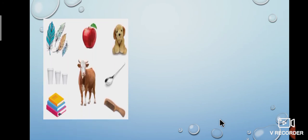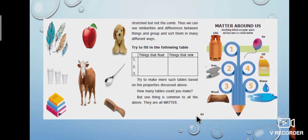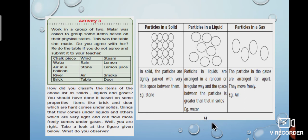Page number 43 gives the similarities and differences of matter. Finally, we conclude that matter is anything which occupies space and has mass. In page number 44, there is a simple activity — classify the items whether they are solid, liquid or gas. Try it on your own. Below the activity, there is the arrangement of particles in solid, liquid and gas, which we discussed earlier. Solids are tightly packed with little space between them. Liquids are arranged loosely and can move freely — that is, their movement is greater than solids. Gases are arranged very loosely and in continuous random motion.